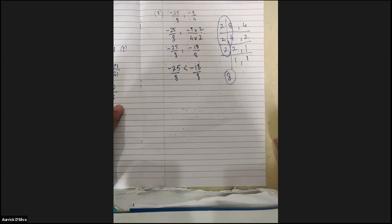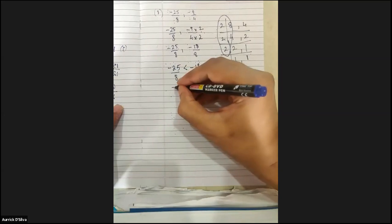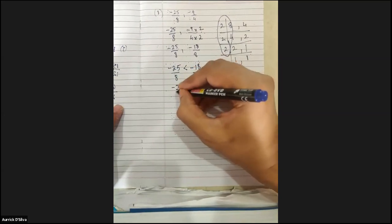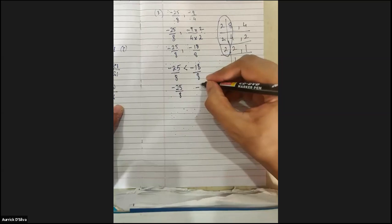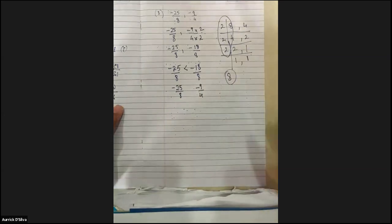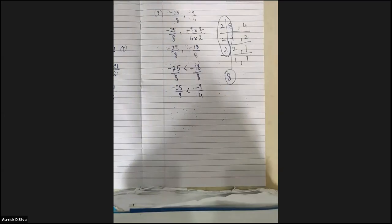But is the sum over? No, because the number minus 9 upon 4 should come — we should use the original fractions. So instead of minus 18 upon 8, I should write minus 9 upon 4. And since the right side is bigger in the converted form, out of the original fractions, minus 9 upon 4 is greater than minus 25 upon 8. Thank you, Krishna.